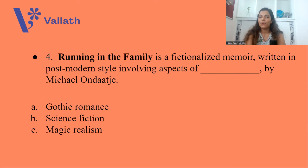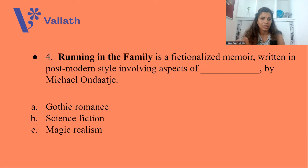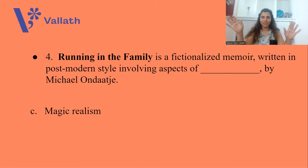Question number four: Running in the Family is a fictionalized memoir written in postmodern style by Michael Ondaatje. Running in the Family is a memoir by Michael Ondaatje and it involves what? A. Gothic Romance, B. Science Fiction, or C. Magic Realism. The answer is option C, Magic Realism — where magic is shown to be real, just like the ordinary.